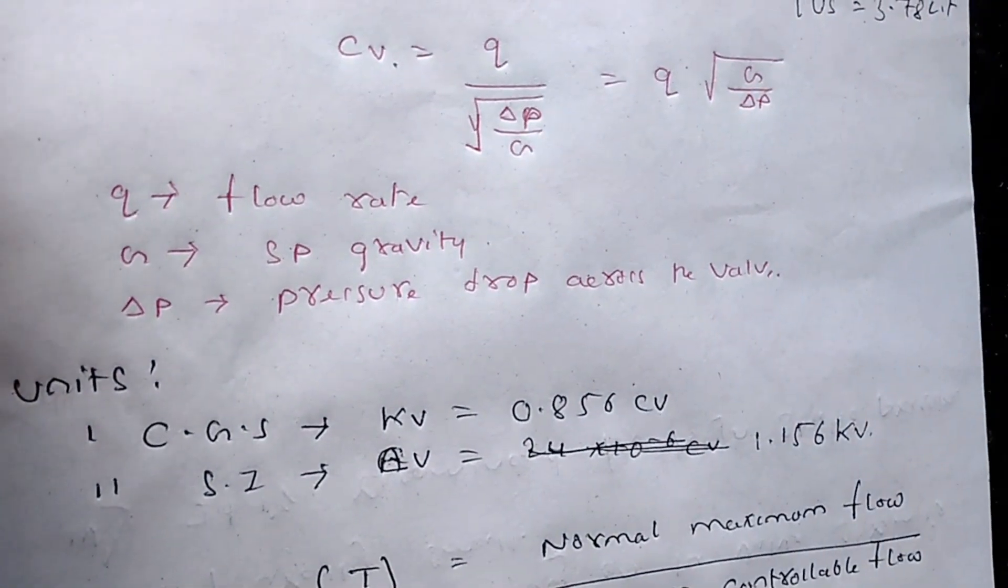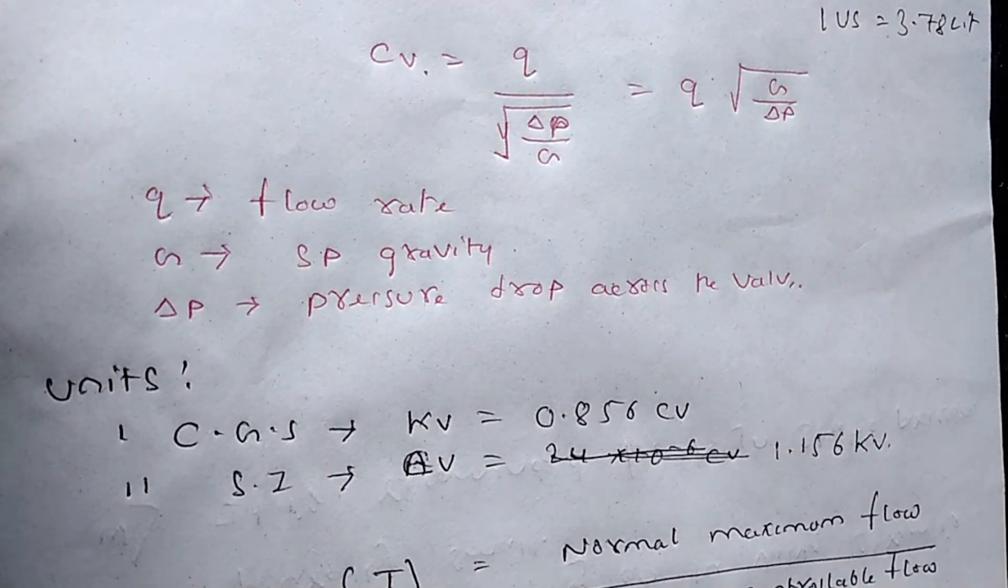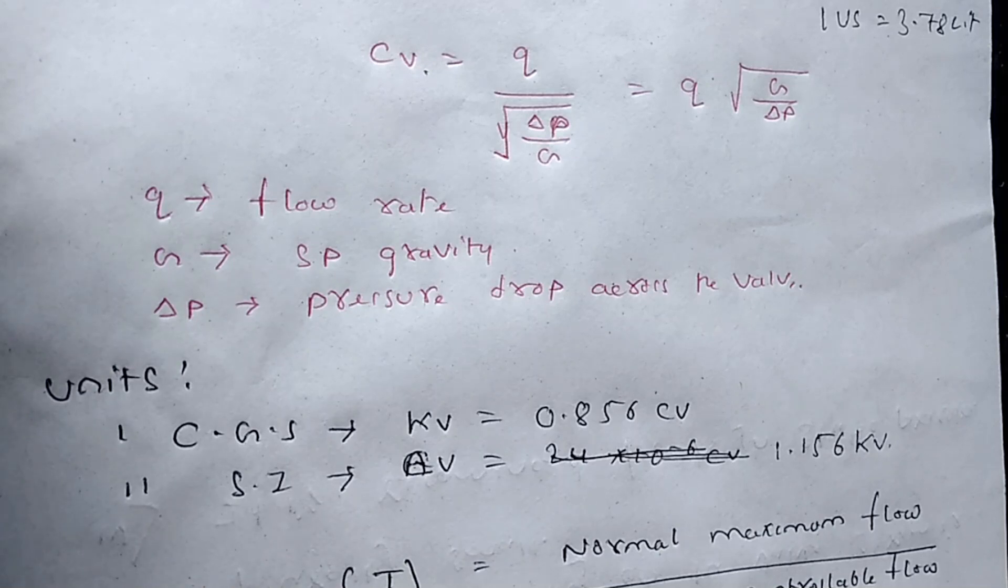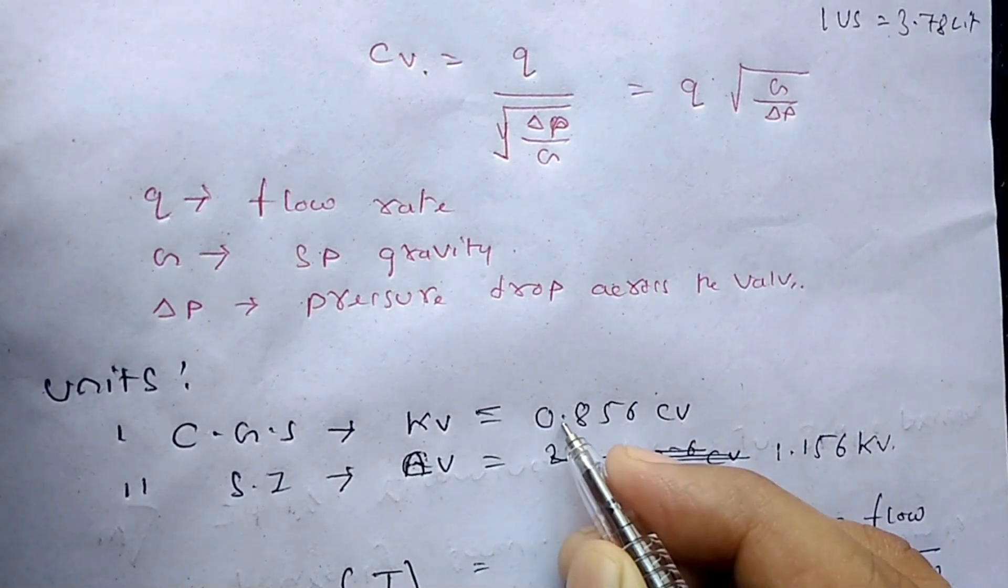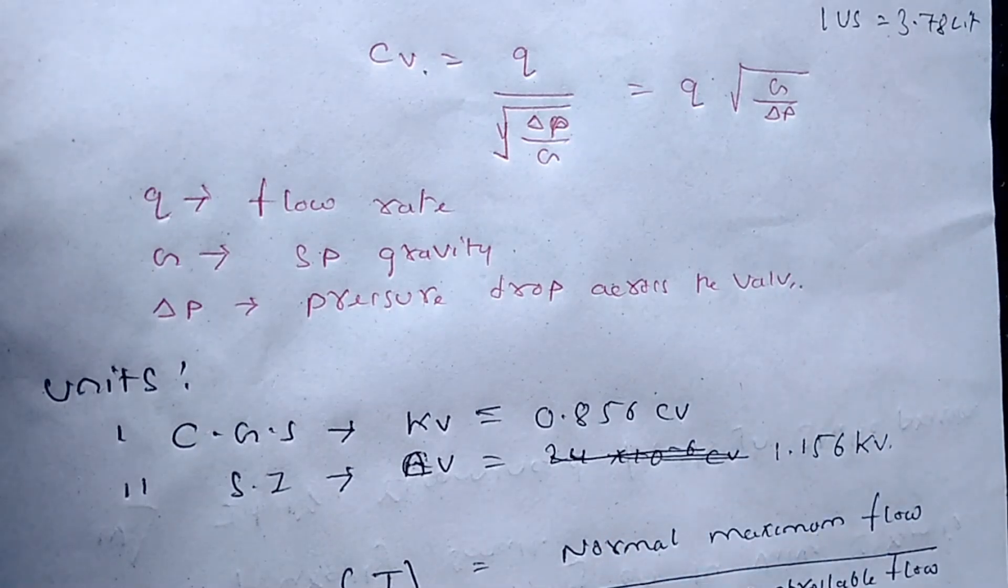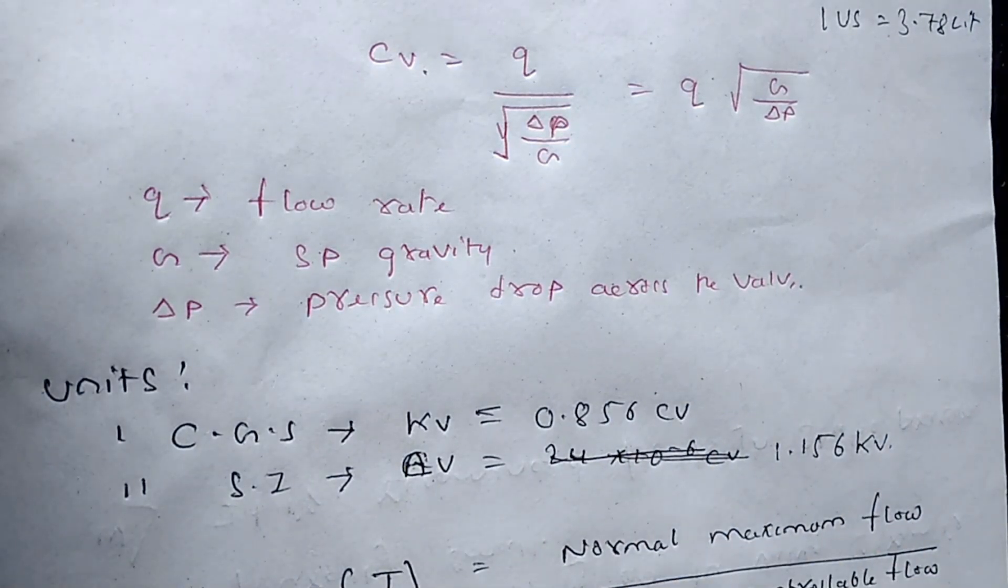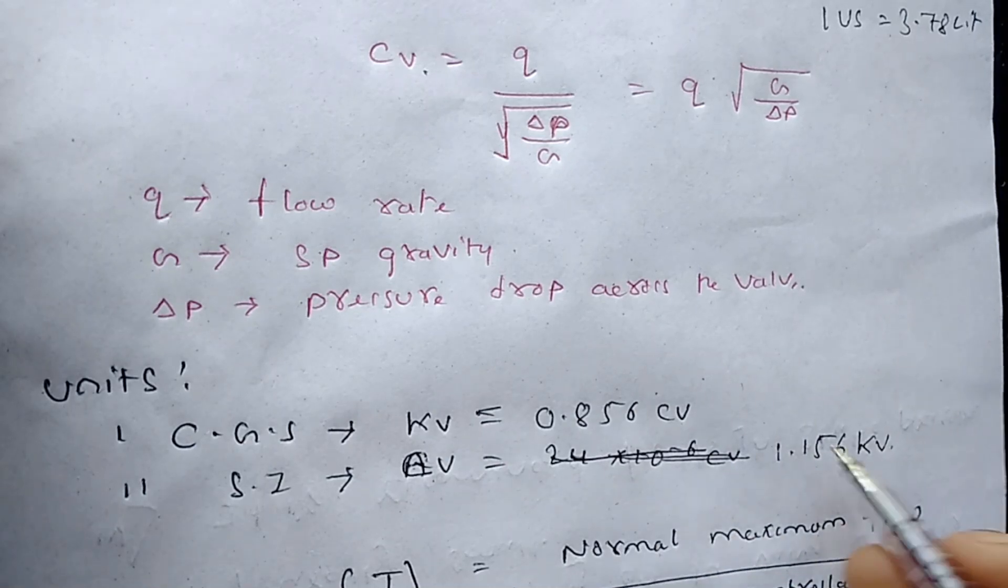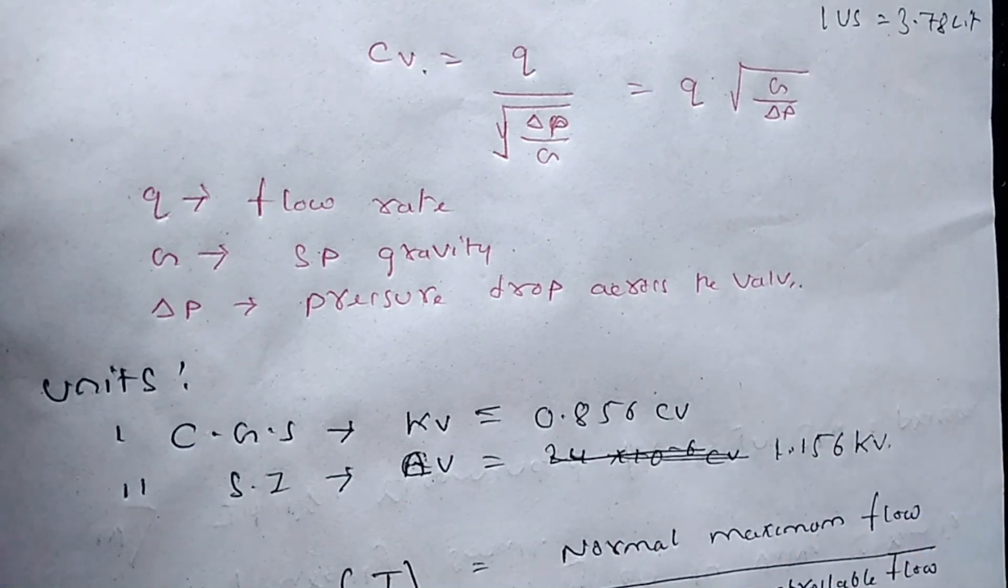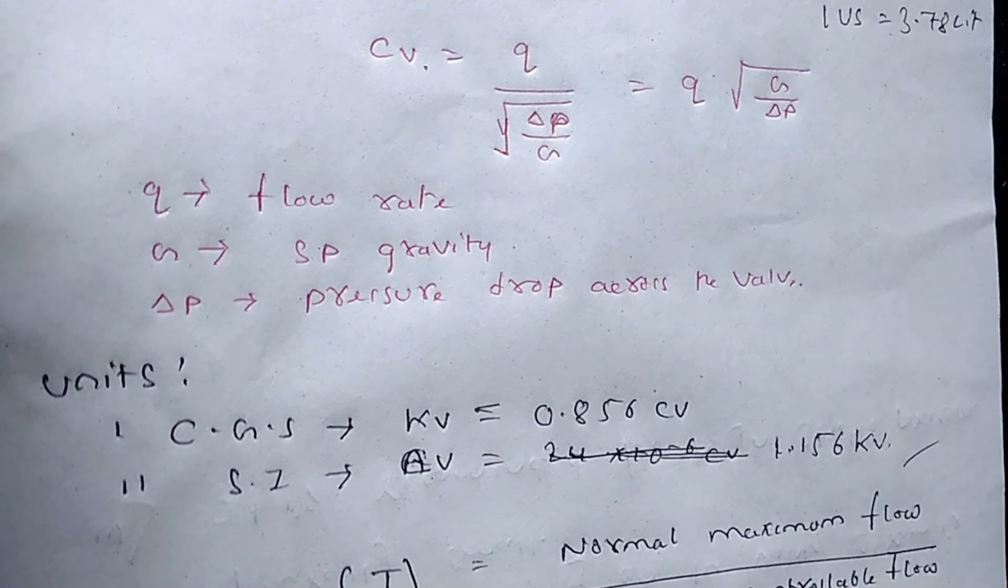Now move to the units. Unit of valve coefficient: In CGS, it is KV. What is KV? The valve coefficient in metric unit. So KV equals 0.856 CV. And in SI, CV, that is coefficient in empirical unit, then 1.156 AV. This point is very important.